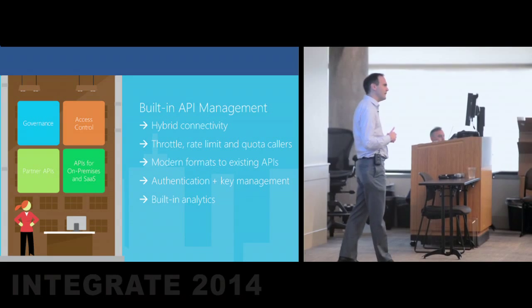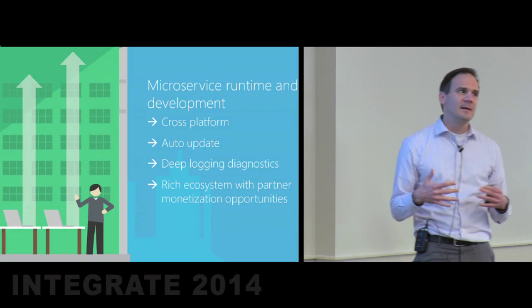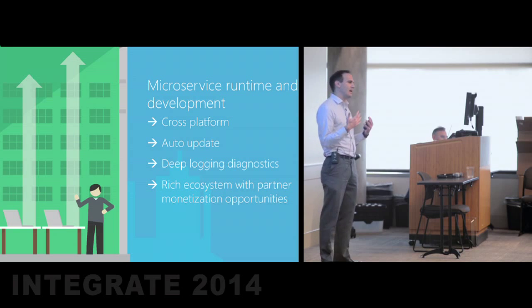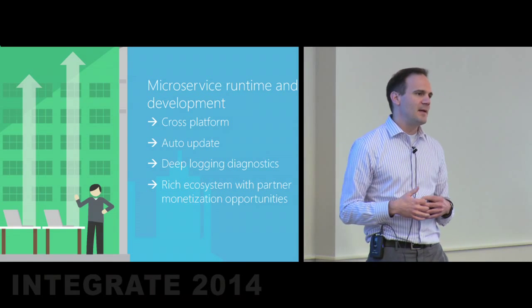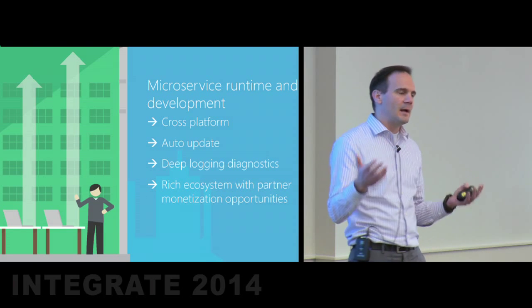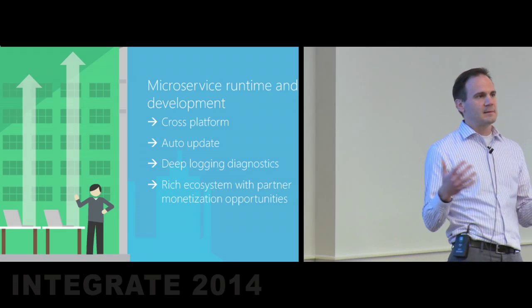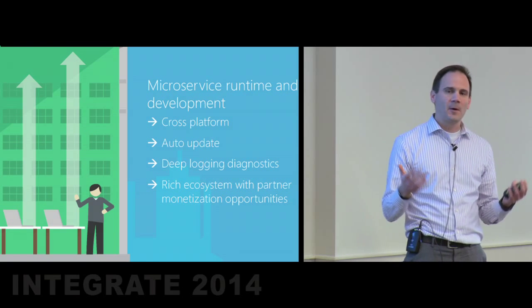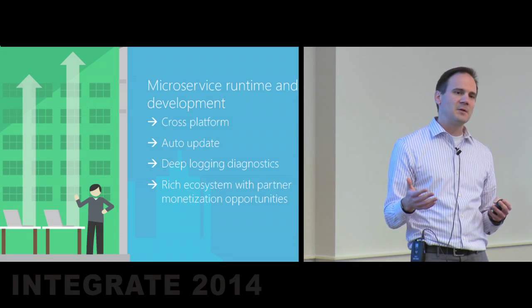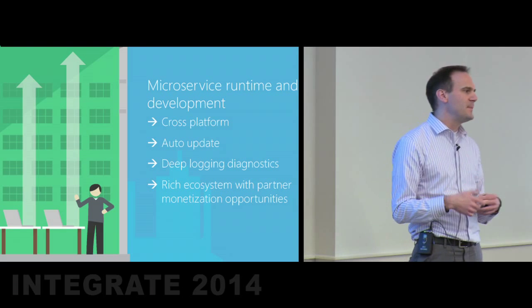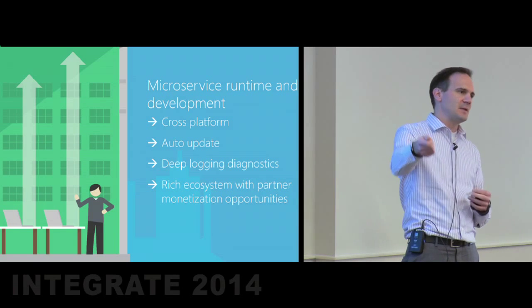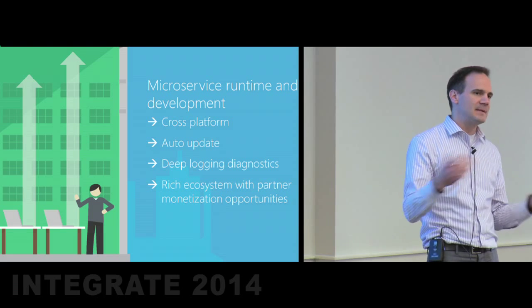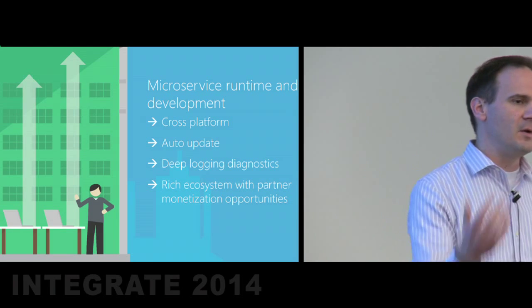On top of that API management layer, we're going to have a microservice runtime for building APIs that make it easy to extend the platform. We're going to use this same public extensibility point to build hundreds of APIs ourselves. This is what you'll use if you're a partner or customer of BizTalk today to extend the platform to connect to your own internal systems or to connect to SaaS systems. The microservice runtime will support cross-platform — so you'll be able to build microservices in any language — and we'll support manually or auto-updating those microservices in a gallery fashion, with a private enterprise gallery within your corporation or a public gallery. It'll have deep logging and diagnostic support.